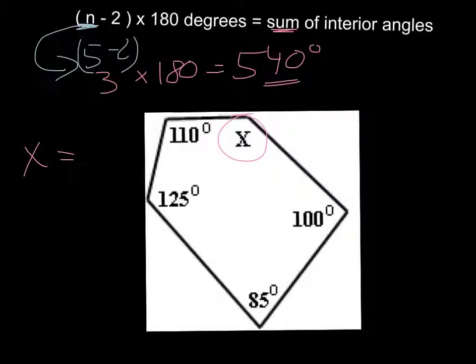So 540 minus 110. So we remove 110 from it. That would be 430. Then take away another 100. So take away this one. Minus 100.